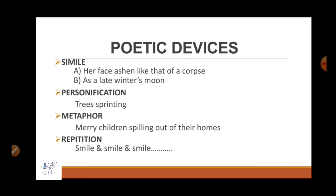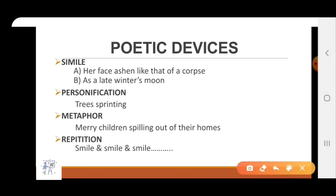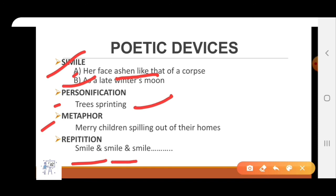Now we will see which poetic devices are used in this poem. First, simile is used — her face ashen like that of a corpse, the word 'like' is given here. Second simile: as a late winter's moon. The second device is personification — trees sprinting: trees are running very fast; how can trees run fast? It means they are personified. Third is metaphor — merry children spilling out of their homes. Next is repetition — smile, smile and smile: the one word is repeated again and again, so this is called repetition.